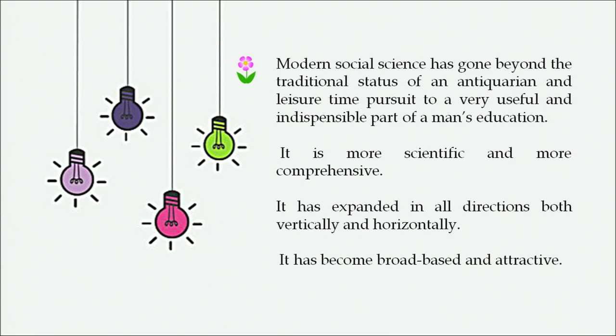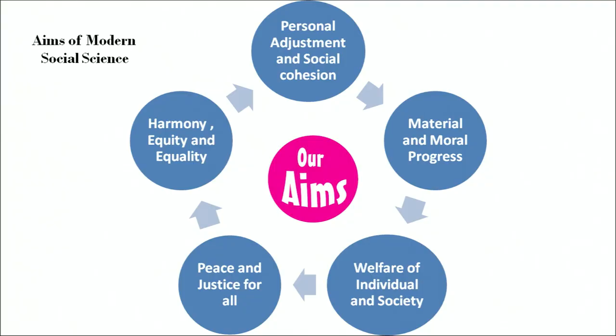Modern social science has gone beyond the traditional status of an antiquarian pursuit to become a very useful and indispensable part of a person's education. It is more scientific and more comprehensive, and has expanded in all directions — both vertically and horizontally — in our society and globe. The aims of modern social science teaching can be framed as: adjustment and social cohesion, material and moral progress, welfare of the individual and society, and peace, justice, harmony, equity, and equality for all.